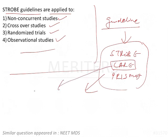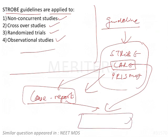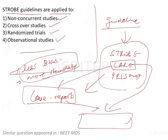For example, CARE is basically for case reports, so to do a proper case report we should follow the CARE guideline. If we follow the particular guidelines and the specific set of rules, we can expect less bias and more standard results that can be easily comparable with other similar studies.